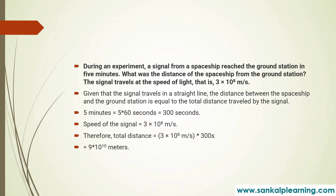During an experiment, a signal from a spaceship reached the ground station in five minutes. What was the distance of the spaceship from the ground station? The signal travels at the speed of light, that is 3×10⁸ meter per second. Given that the signal travels in a straight line, the distance between the spaceship and the ground station is equal to the total distance traveled by the signal.